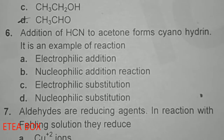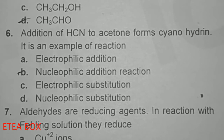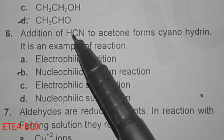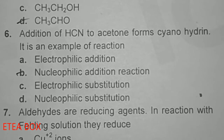Addition of HCN to acetone forms cyanohydrins; this is an example of a nucleophilic addition reaction, so option B is correct. In this case, cyanide acts as a nucleophile — when the H-CN bond is broken, the negative charge comes on cyanide, making it a nucleophile that is added to the aldehyde or ketone.